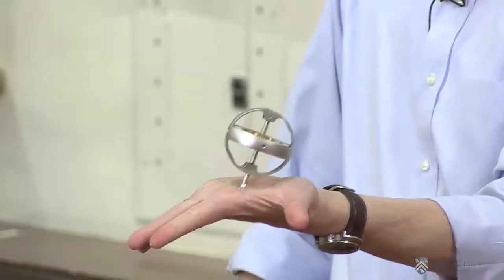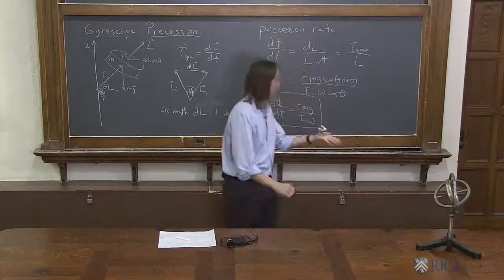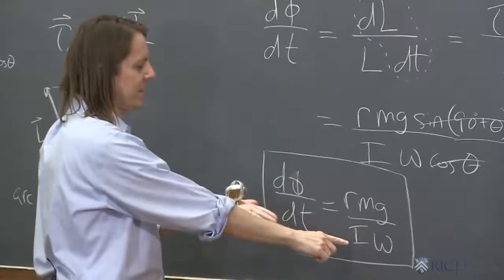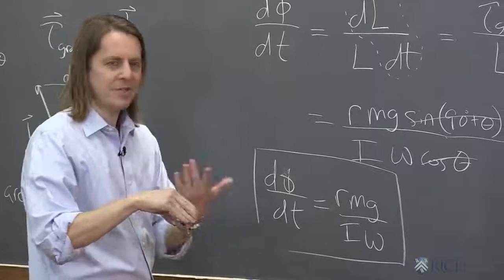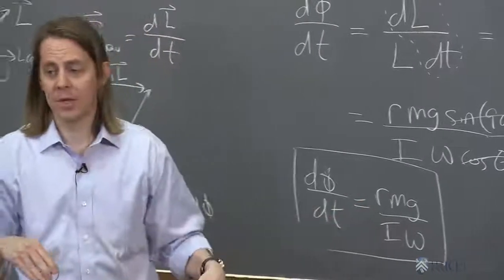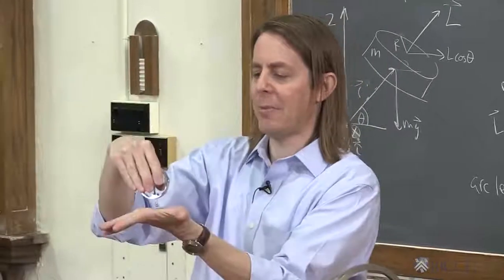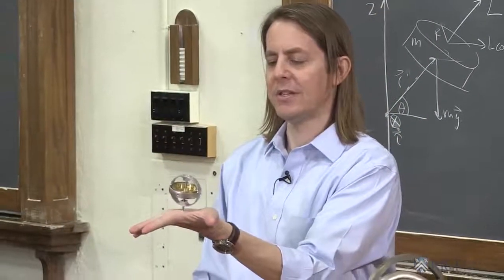Pretty slow. Now what can we change here? We can't change G. We can't change M. We can't change the disk properties. We can't change omega. I spun it up. But we can change R. So little r is the distance from the contact to the center of mass of that disk. So you can see that's going kind of slow.